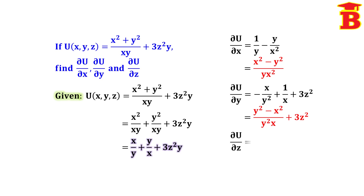Next, we have to find ∂u/∂z — differentiate u partially with respect to z. Mark the z term; we have z term only in 3z²y. Differentiating z² gives 2z. So this is 3 × 2z × y. Multiplying: 3 × 2 = 6, so ∂u/∂z = 6yz.